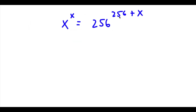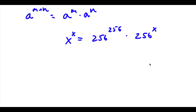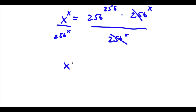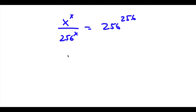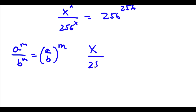For the next problem, x to the power of x equals 256 to the power of 256 plus x. Using the property that a to the power of m plus n equals a to the power of m times a to the power of n, I can rewrite 256 to the power of 256 plus x as 256 to the power of 256 times 256 to the power of x. Dividing both sides by 256 to the power of x, I get x to the power of x over 256 to the power of x equals 256 to the power of 256. Using the quotient property, this becomes x over 256 to the power of x equals 256 to the power of 256.